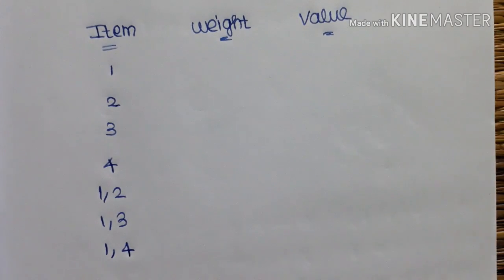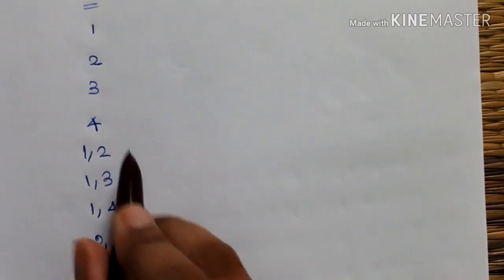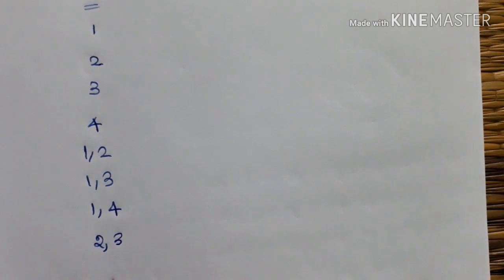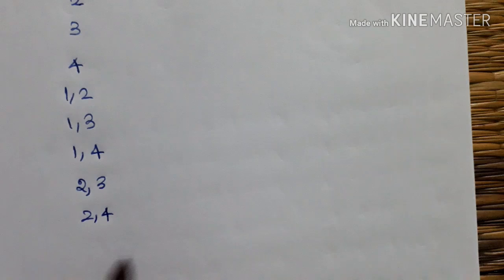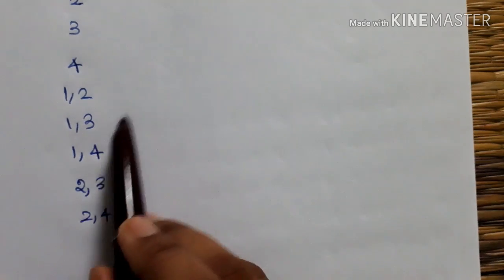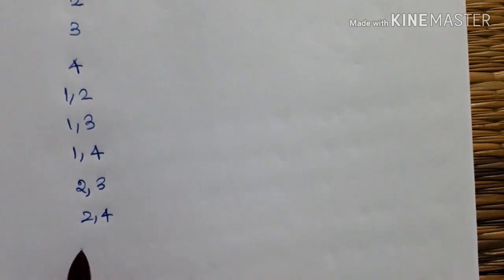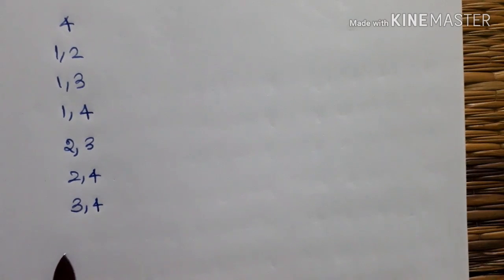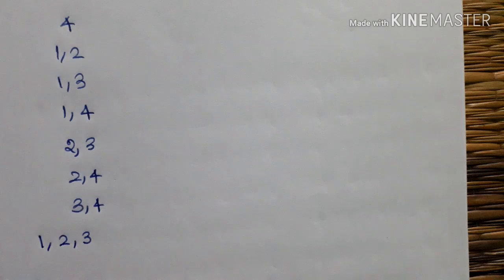Next, we will solve the problem. So: 2, 1, 2, 1, and value. Next, 3, 1, and value. We will solve the problem. First, we have 1, 2, 3, 4.